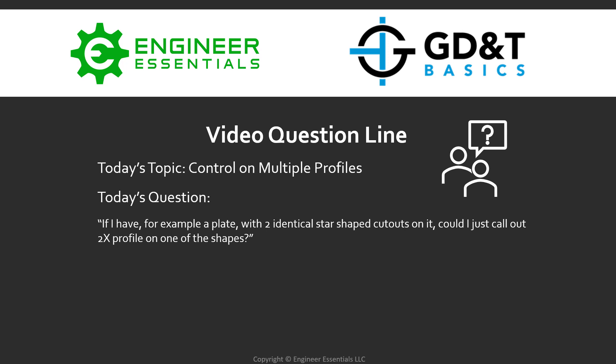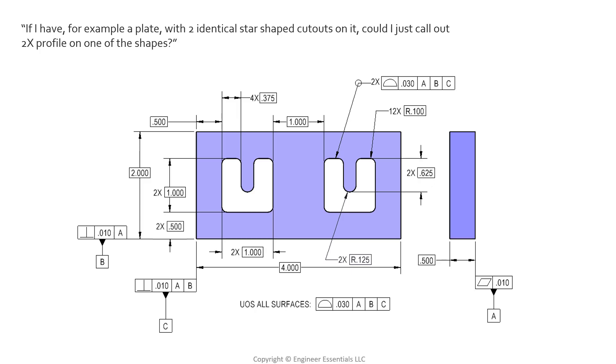Today's topic is control on multiple profiles. The question is from a student: if I have, for example, a plate with two identical star-shaped cutouts on it, could I just call out 2X profile on one of the shapes? So I have this example here—not necessarily two star-shaped cutouts but two irregular shaped cutouts nonetheless that are identical. We know they're identical because of all the basic dimensions here, you see they have 2X on them.